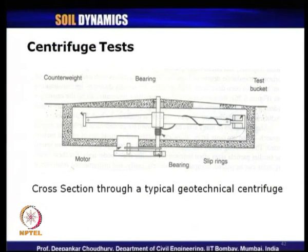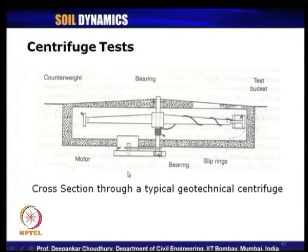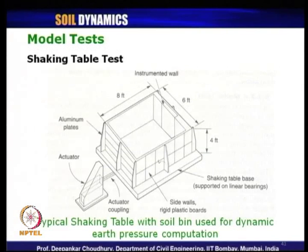Another model test is the centrifuge test for obtaining dynamic soil properties. In a centrifuge test, this is the cross-section of a typical geotechnical centrifuge — we have a bearing, slip rings, and a test basket. Counterweights are provided, and as it keeps rotating, centrifugal force is generated. This principle is used to scale up the model dimension to a prototype or actual field dimension. Those aware of centrifuge testing know the drawbacks of the one-gravity or 1G model test for geotechnical engineering problems.